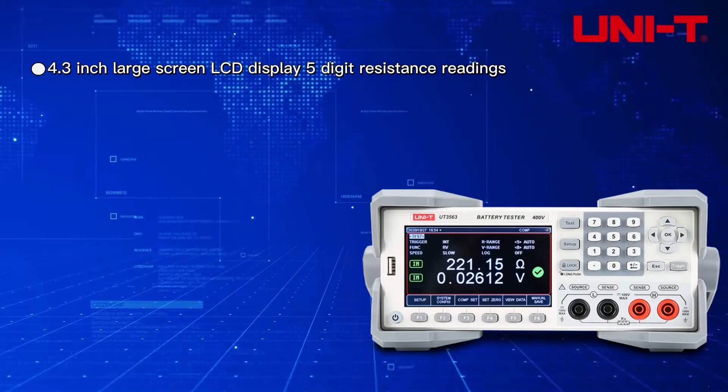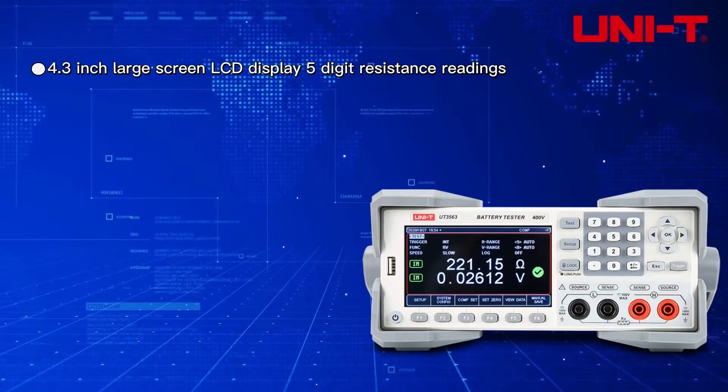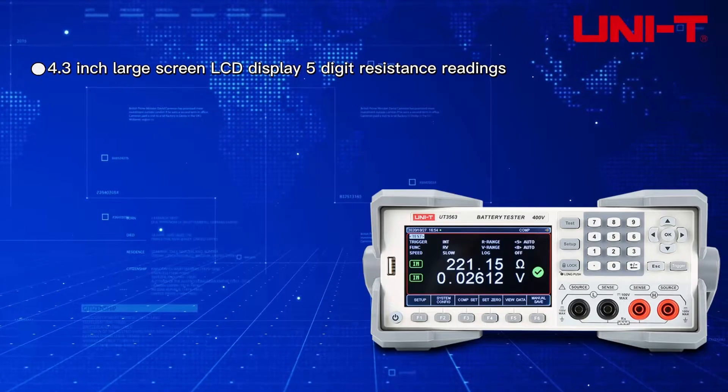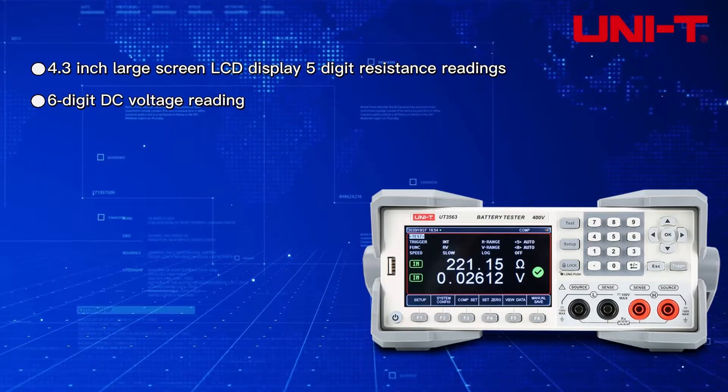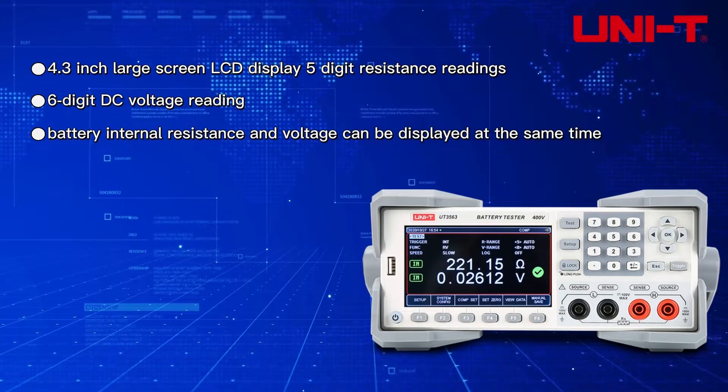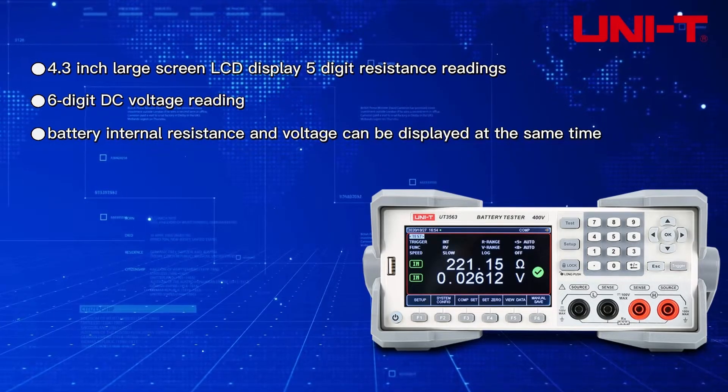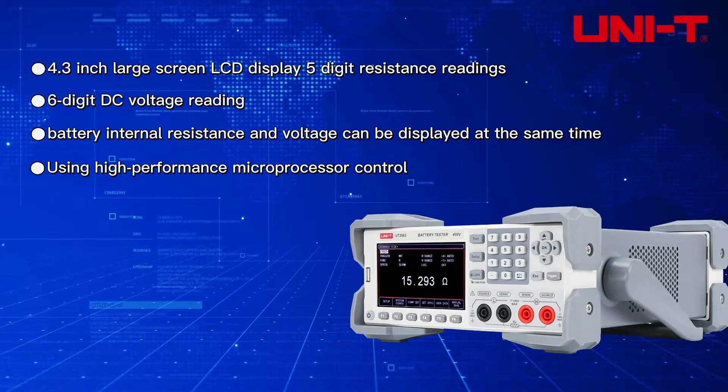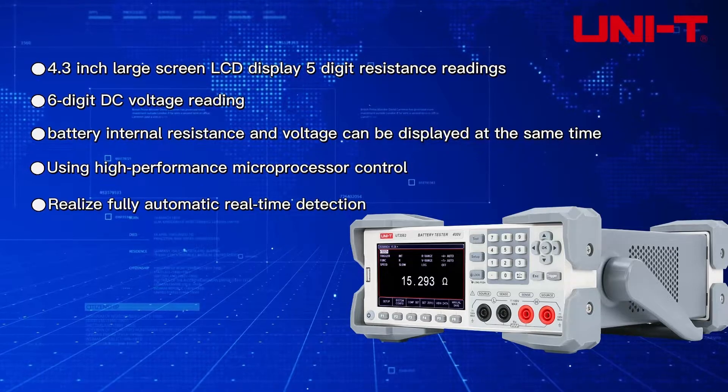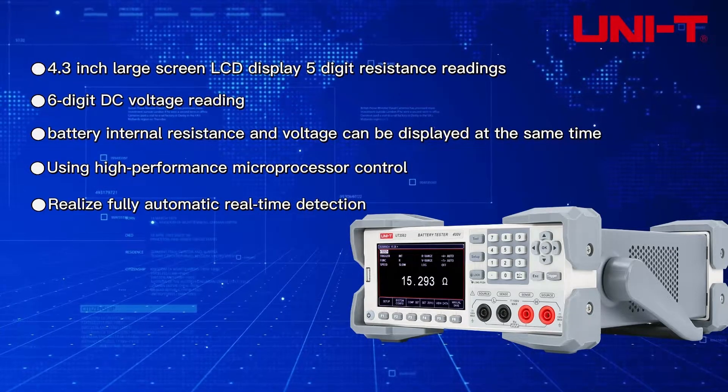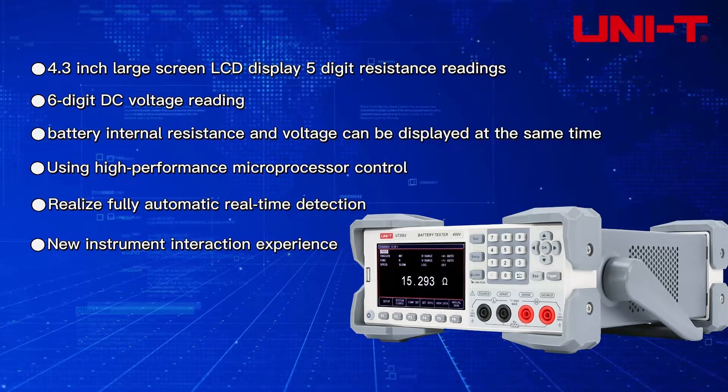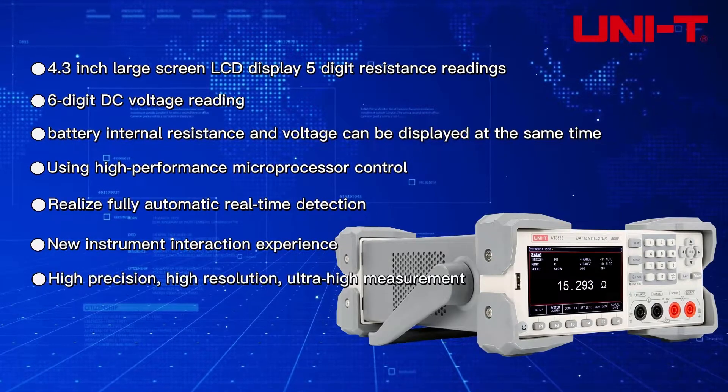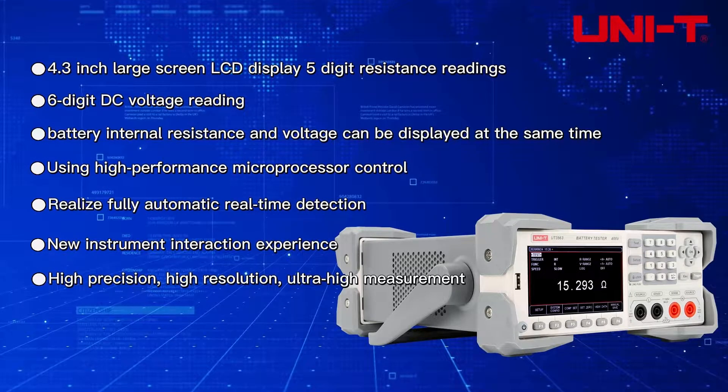4.3-inch large screen LCD display, 5-digit resistance readings, 6-digit DC voltage reading. Battery internal resistance and voltage can be displayed at the same time using high-performance microprocessor control, realize fully automatic real-time detection. High precision, high resolution, ultra high measurement.